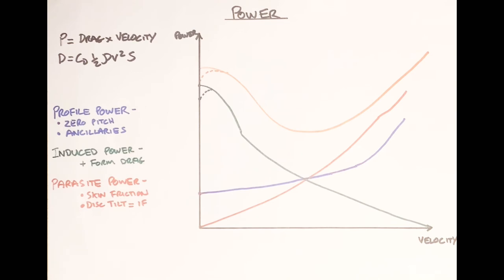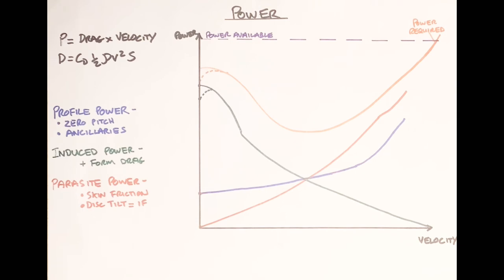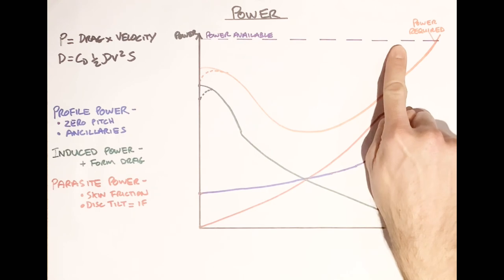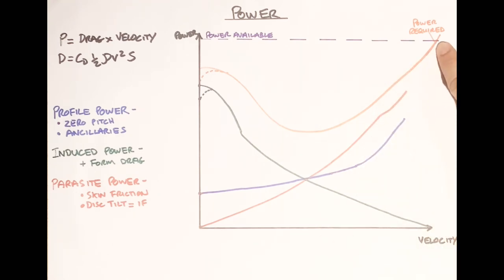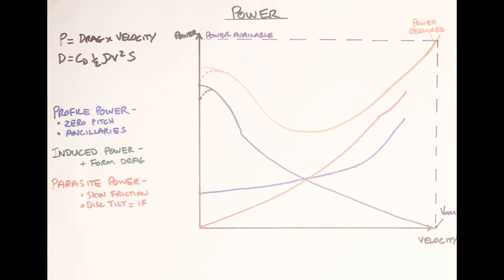Now we've got our power curve, we can use it to identify key parameters in flight. We add an arbitrary power available line. The first obvious one: if this is the total power required and this is all the power available, the fastest we can possibly go before maxing out our power is where the power required line crosses the power available line — that point is your V-max, your maximum speed in straight and level flight.